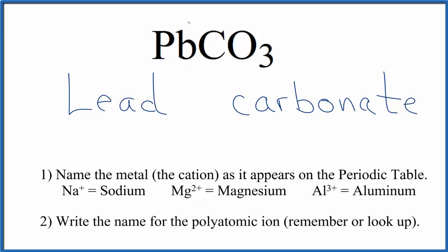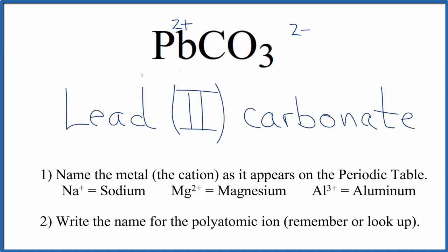But lead is a transition metal. So because lead is a transition metal, we need to write the charge in the name here. This whole carbonate ion is 2 minus. This is a really good one to remember. So the lead, it's going to have to be 2 plus for the net charge to add up to 0. So we'll put a 2, Roman numeral 2 here, between the names. And the name for PbCO3 is lead 2 carbonate.